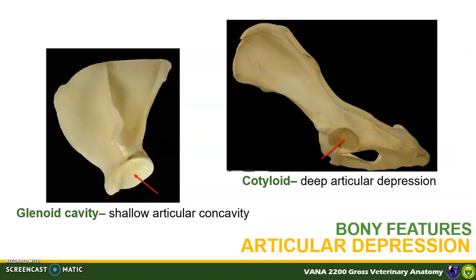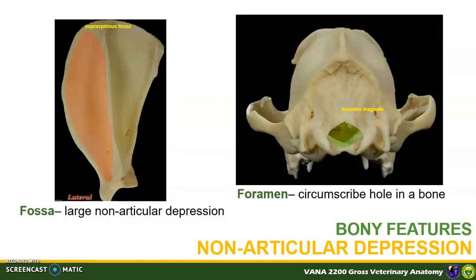For articular depressions, they can be classified as shallow or deep. A glenoid cavity is a shallow articular concavity, as seen at the glenoid cavity of the scapula. On the other hand, if the concavity is deep, the term used is cotyloid, as in the case of the acetabulum of the os coxae. For non-articular depressions, a typical example is the fossa — a large non-articular depression that is usually wide in area for the attachment of muscles, such as the supraspinous and infraspinous fossae of the scapula.